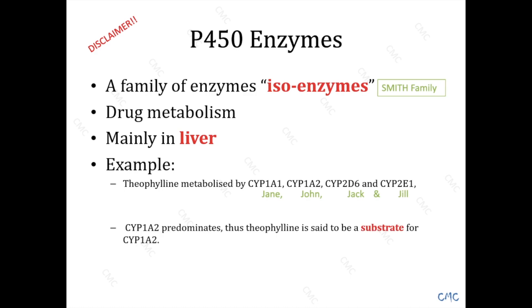Even though all these four family members — and this by no means is an exhaustive list of the cytochrome P450 enzymes, the Smith family is a lot bigger than this — John Smith is particularly keen to metabolize theophylline. Therefore, theophylline is said to be a substrate for CYP1A2, or in other words, for John Smith. You do not need to know the names of these isoenzymes or which particular isoenzyme works on which particular drug. But you do need to understand the basic concept that the liver uses these enzymes to process drugs, and some medications affect the isoenzymes and alter their workings — these are known as inhibitors and inducers.